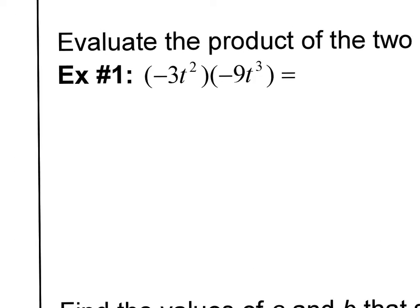When I'm multiplying two monomials like that, the first thing I'm going to do is just multiply the numbers. So what's negative 3 times negative 9? Well, negative times negative is positive, and 3 times 9 is 27. Then I'm going to look at the variables. The variables have exponents on them. Whenever I am multiplying variables with exponents, all I have to do is add the exponents.